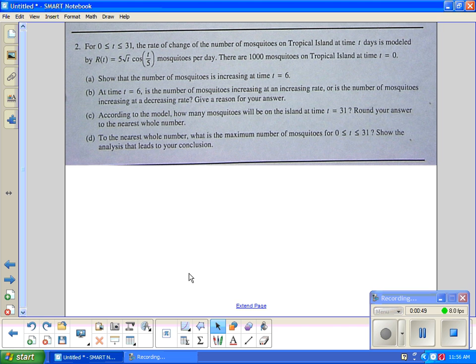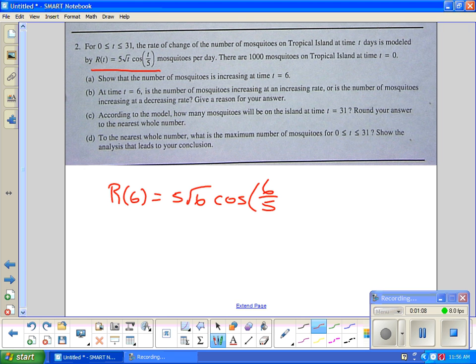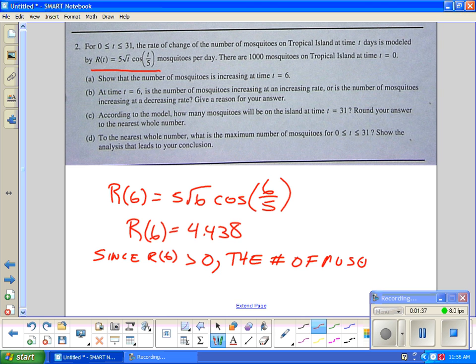Show that the number of mosquitoes is increasing at time t = 6. To prove it's increasing, we have to show that the derivative is over 0. We just have to use R(6). You have to make sure your calculator is in radians. Since R(6) is greater than 0, the number of mosquitoes is increasing.